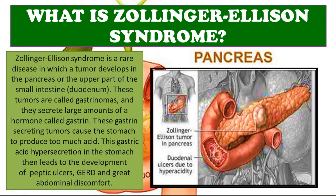Zollinger-Ellison syndrome is a rare disease in which a tumor develops in the pancreas or the upper part of the small intestine, which is called the duodenum. These tumors are called gastrinomas and they secrete large amounts of a hormone called gastrin. These gastrin-secreting tumors cause the stomach to produce too much acid, which leads to the development of peptic ulcers, GERD, and a great deal of abdominal discomfort.